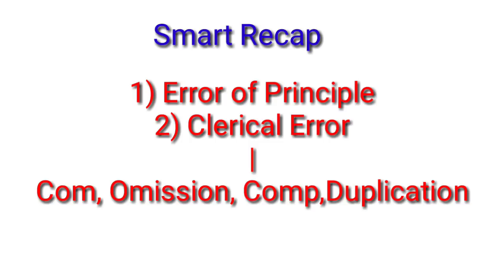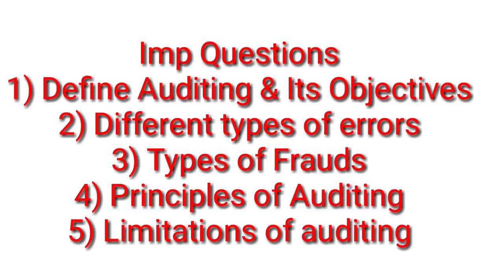Let's recap: the types of errors are error of principle, clerical errors — which include error of omission, error of commission, and error of duplication — and compensating errors. In this chapter, exam questions you will always be asked include: define auditing and its objectives, define different types of errors, define different types of frauds, and principles and limitations of auditing — which I will cover in a different video. If you liked this video, press the like button, share with your friends, subscribe to the channel, and hit the bell icon so you are notified next time. Thank you.